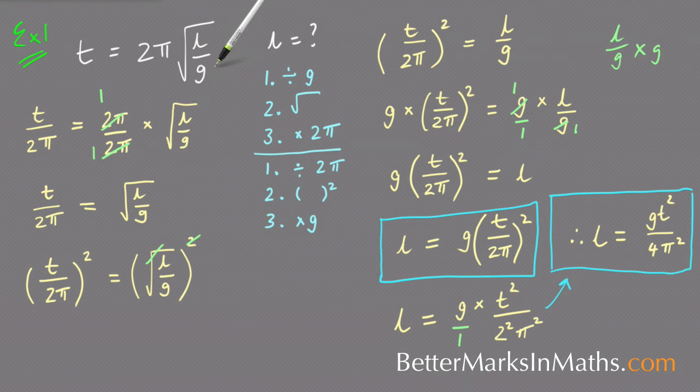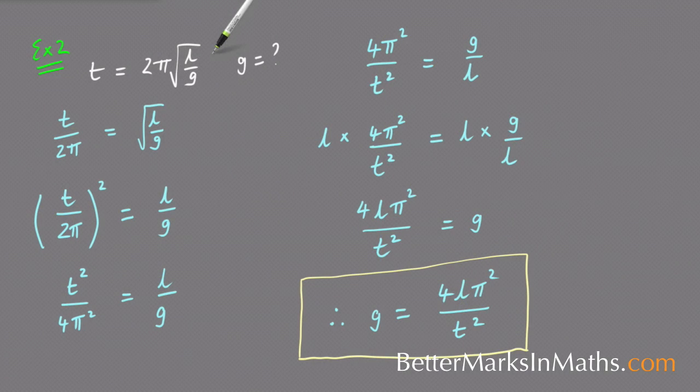I'm going to also now show you how to make the bottom letter the subject, which is a little bit trickier, but it's actually not as hard as it looks. So here's the same formula, and this time you're being asked to make G the subject. So just undoing the same things in the same order that I did in the first example, dividing by 2π on this side, you end up with this, then squaring both sides to get rid of the square root. I've done that here. And now G is on the bottom, and I need to make G the subject.